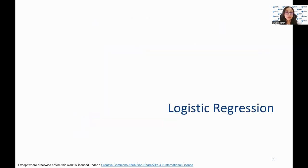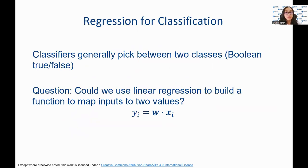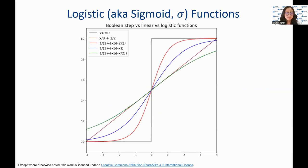Now we will be learning about another supervised learning algorithm known as logistic regression. Classifiers generally pick between two classes, either true or false. The question is: could we use linear regression to build a function to map inputs to two values? The range of values of a linear function is infinite, so we want to map it in a way that approximates a step function. Here, we model boolean step versus linear versus logistic functions, and note how the sigmoid function with different coefficients can approximate the 0-to-1 step function more and more tightly.